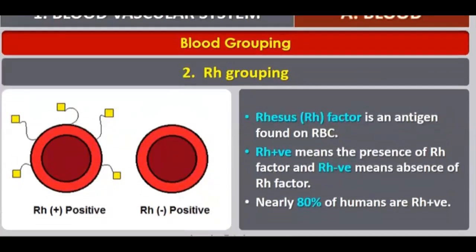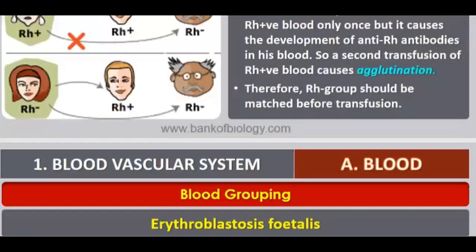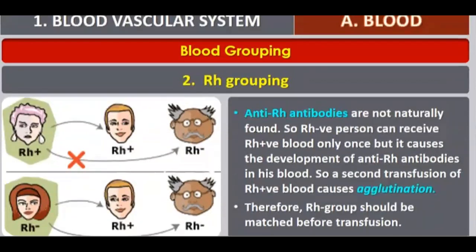Moving to the next part of blood grouping — the RH grouping. RH is another factor that enhances blood grouping. Anti-RH antibodies are not naturally found. An RH negative person can receive RH positive blood only once, but it causes the development of anti-RH antibodies in their blood. A second transfusion of RH positive blood causes agglutination, aggregate formation, or blood coagulation, as the antigens and antibodies will react.